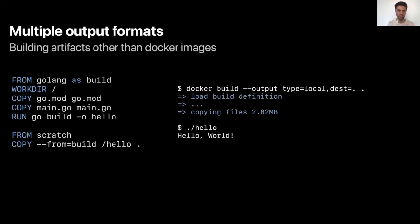Let's see how to build a simple binary using BuildKit and a Docker build command. On the left side of the slide you can see a simple Dockerfile that runs a go build command and then copies the binary into a scratch image. Because we use a scratch image, we know the image is empty except for the binary we copied over. When we run the Docker build command specifying the output local type, instead of producing a Docker image, it copies the file from the build environment to the current directory, and we can run the produced binary and get hello world.